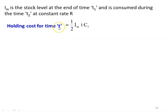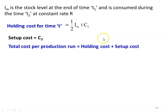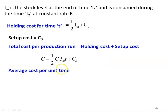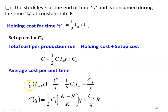The holding cost for time t equals (1/2) × I_m × t × c1, where (1/2) × I_m × t is the area of the triangle and c1 is the holding cost per unit per unit time. The setup cost is c3. Total cost per production run equals holding cost plus setup cost, so C = (1/2) × c1 × I_m × t + c3. The average cost per unit time, dividing by time: C(I_m, t) = C/t = (1/2) × c1 × I_m + c3/t.